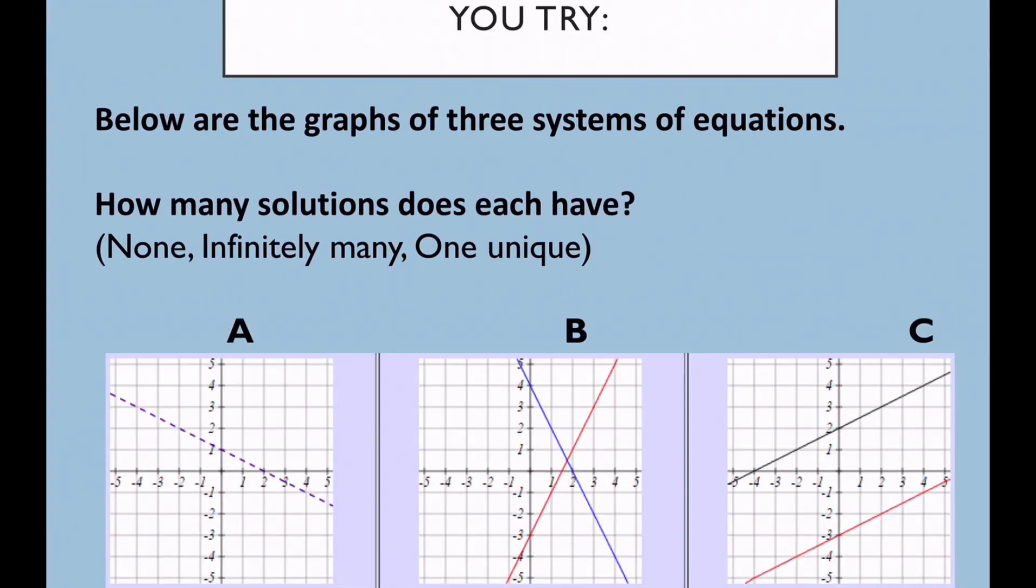Okay, so here we see that we have three graphs and again we can say that B has one unique solution and again that solution is going to be this point right there. So that point where it intersects, whatever that X and Y is, that's going to satisfy both of our equations.